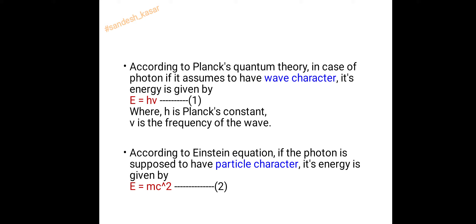According to Einstein's equation, if the photon is supposed to have particle character, its energy is given by E = mc². So we now have two equations for energy: equation 1, E = hν, due to the wave character of the photon, and equation 2, E = mc², due to the particle character.